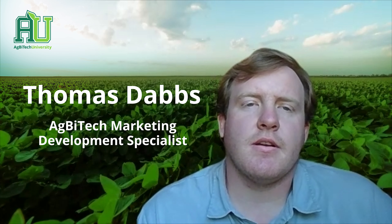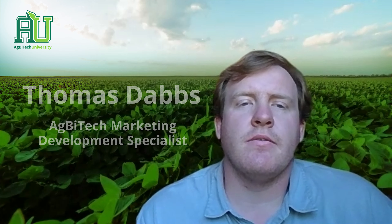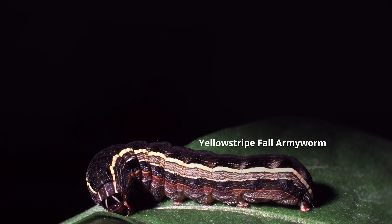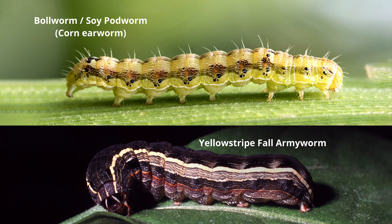Today I want to take a quick minute to go over the difference between the yellow striped armyworms and bollworms, or podworms, when found in soybeans.